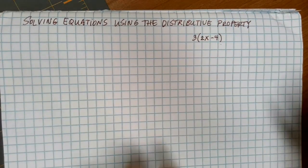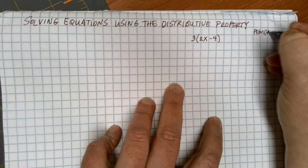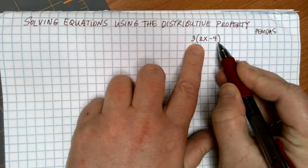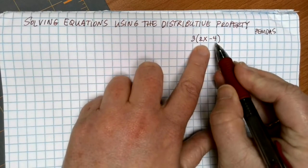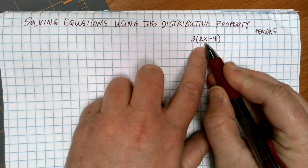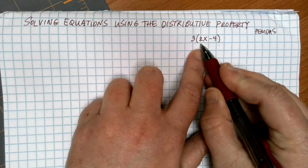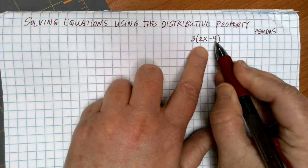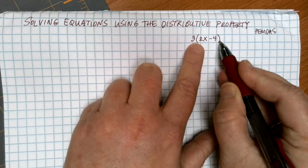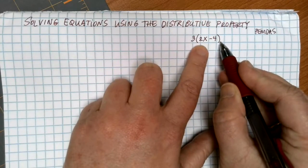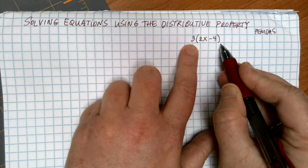If you think about the order of operations — that's our PEMDAS — the first thing that we would have to do in this expression normally is what's inside the parentheses. But here I can't do what's inside the parentheses. I don't know what x is, so I can't do 2 times x, and I can't subtract 4 because these are not like terms. So it seems at this point that I'm kind of stuck with the parentheses as part of this expression, but I'd like to be able to simplify it a little bit more.